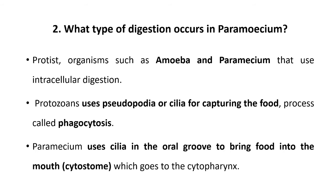The second topic is what type of digestion occurs in Paramecium. After feeding, the second step is digestion. Digestion is a physiological process in which complex food is converted into simple food to get an energy-rich molecule, that is ATP. In case of protozoa like Paramecium or Amoeba, intracellular digestion takes place. Intracellular digestion means the complete digestion takes place inside the cell.